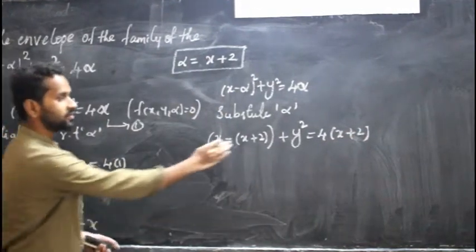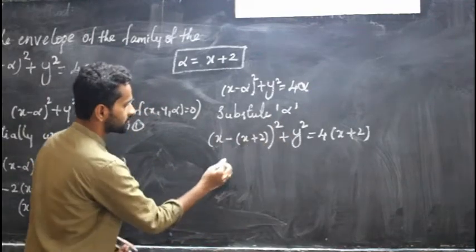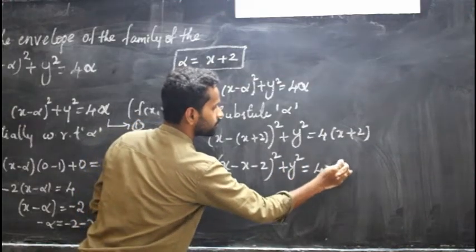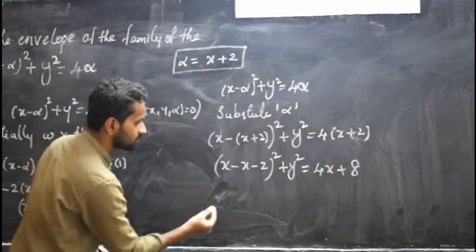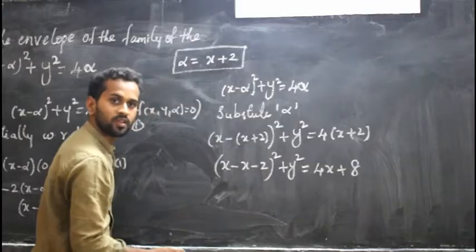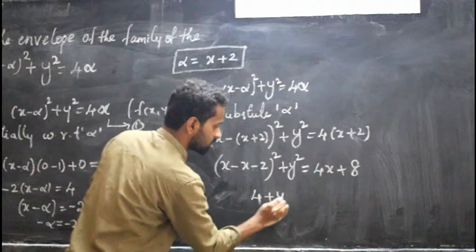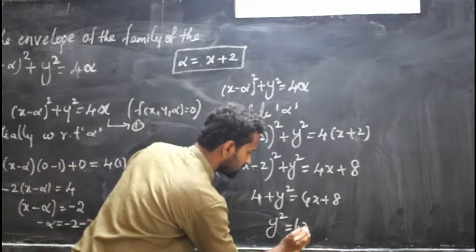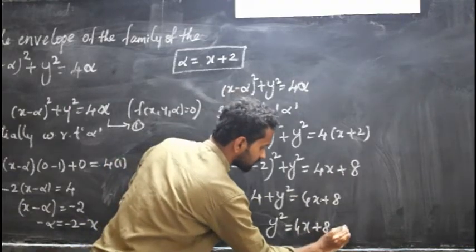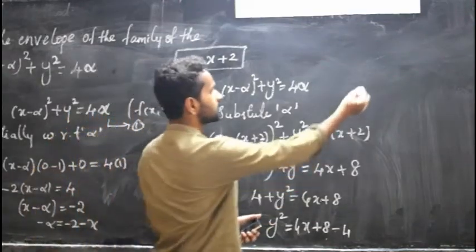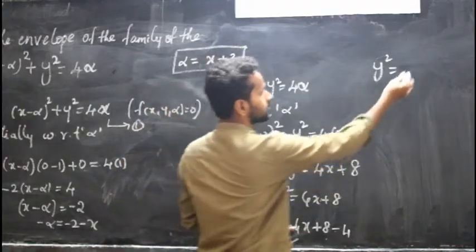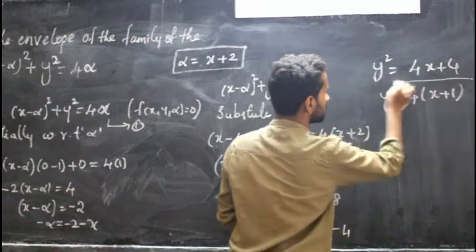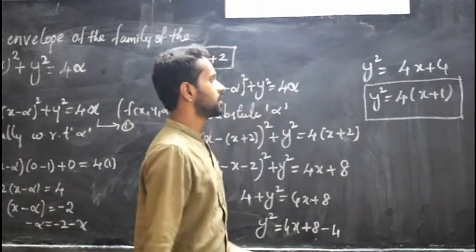Simplifying x minus x plus 2 whole square: x minus x cancels, leaving minus 2 whole square, which is 4. So 4 plus y squared equals 4x plus 8. Taking y squared on the left side: y squared equals 4x plus 8 minus 4, which becomes y squared equal to 4x plus 4. Taking 4 outside: y squared equal to 4 into x plus 1.